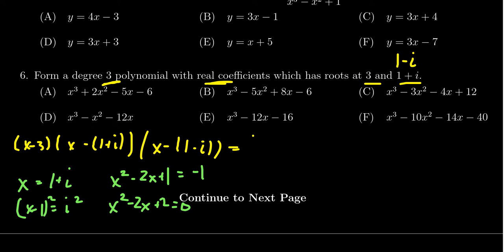So this gives us that we have x minus three times x squared minus 2x plus two. Then we still have to multiply this thing out. No shortcuts on this one. So we distribute the x. You're going to get x cubed minus 2x squared plus 2x.